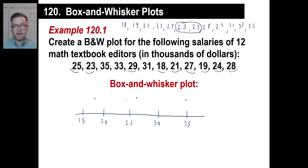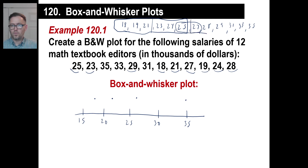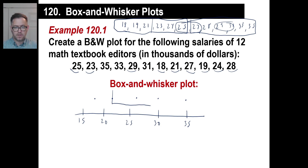Now we're going to find the median of the first part — everything under 26, which is those six numbers. Well, what's the median of the numbers under 26? We have six of them, so we won't have an exact number right in the middle. It's three on this side and three on that side, so 22 is right in the middle — that will be our first quartile. The third quartile will be the median of the ones above 26. There are still six of them, so right in the middle will be 30. Then we'll draw a little box and whisker — and there's the whisker and there's the whisker.